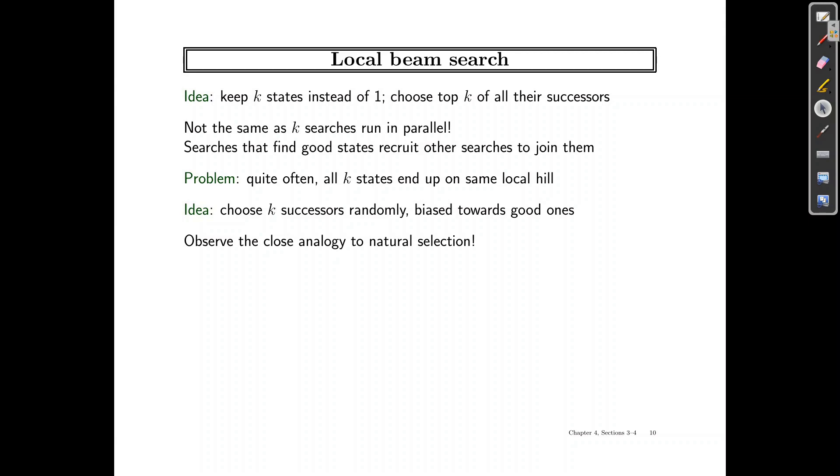So for that, what happens is we add a probabilistic method to the search. Instead of choosing the best from the pool of candidate successors, what it does is it finds one of the successors at random, and the probability is given by an increasing function of its value.